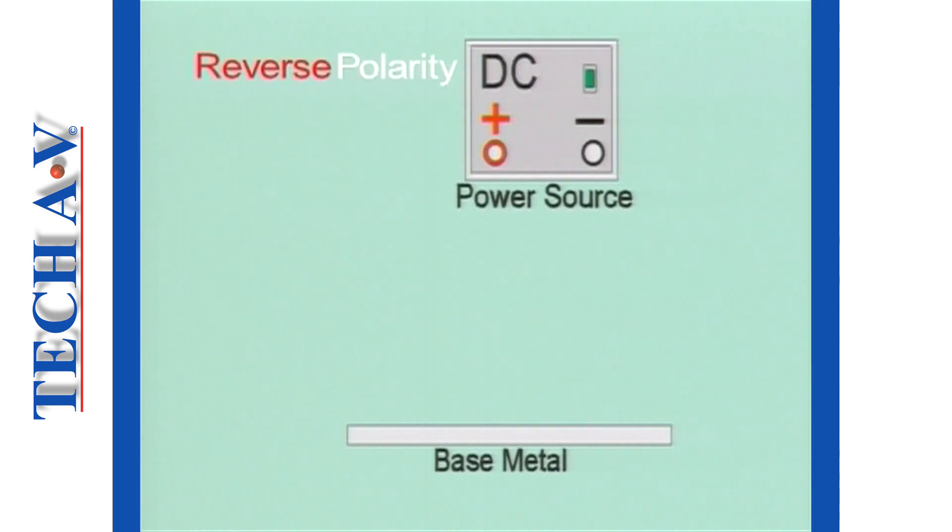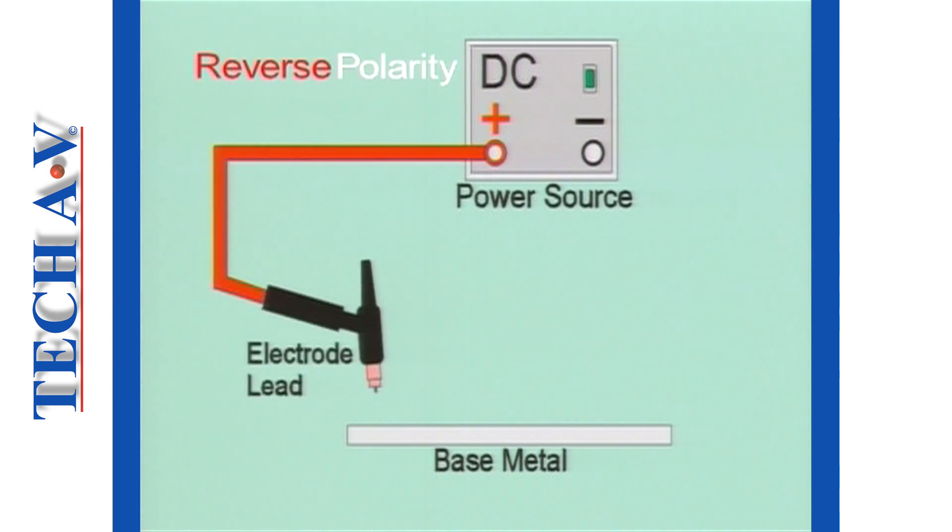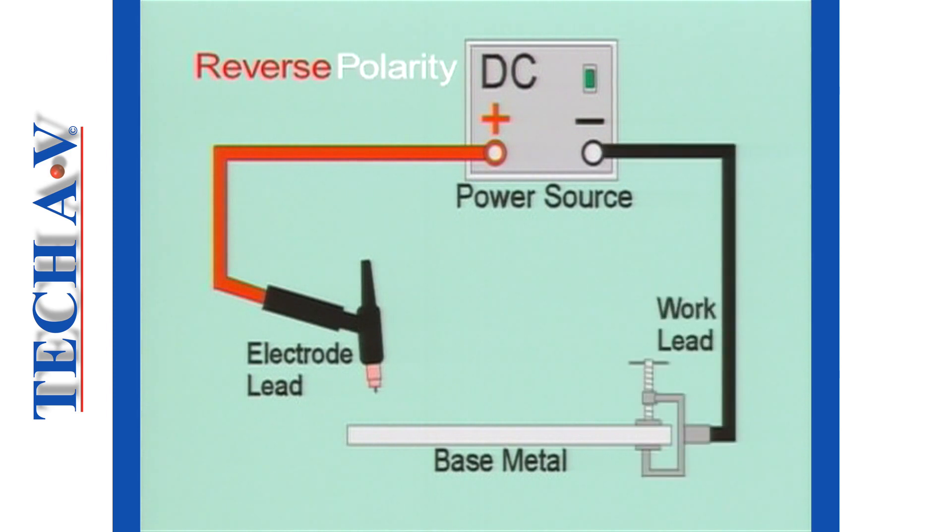Reverse polarity, not surprisingly, is the opposite of straight polarity. Here, the electrode is connected to the positive connection of the power source and the base metal to the negative. Reverse polarity is also known as DCEP, meaning Direct Current Electrode Positive.